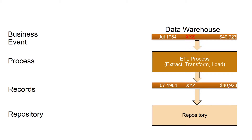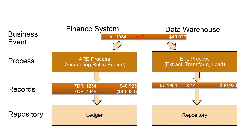Another key aspect of the difference between the financial system and the data warehouse is double entry accounting. A process that often feeds a data warehouse is an ETL process, often seen as a single record in, single record out — a single record from the source system becomes a single record in the data warehouse. In contrast, the financial system has a double entry system: a single transaction in the source system becomes a debit and credit in the financial system.